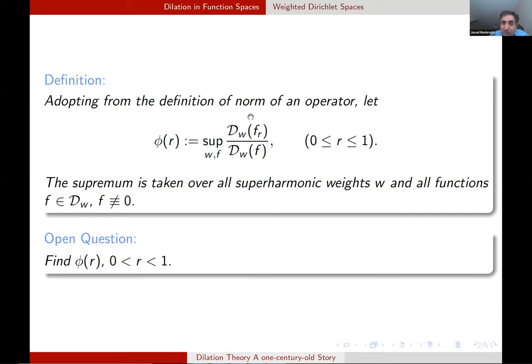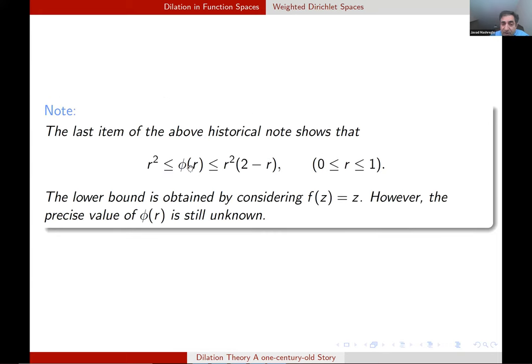But as in the definition of the norm, we can consider the quotient of the left side over the right side and take the supremum with respect to all weights and all function in D_w and call it V_R. V_R still is not known, but based on the estimation we provided in the just few slides is majorized by R^2 times 2 minus R. And if you consider the function f of z equal to z is the lower bound is R^2. That's the best thing we know up to now. And also, I mean, it's not published yet. We could show that this is indeed strictly less. So this is not the optimal constant. The optimal or precise value of V_R still is not known.